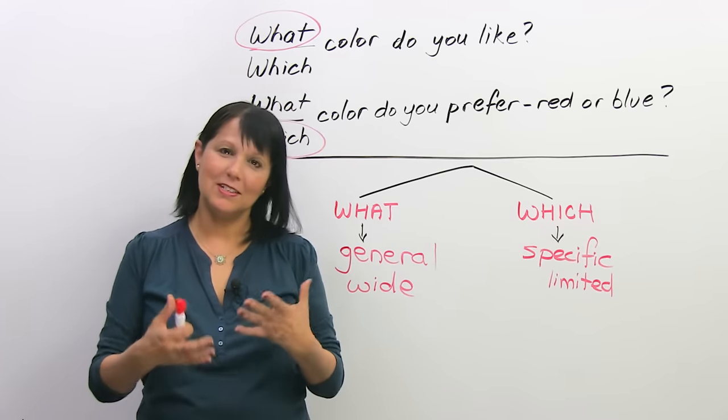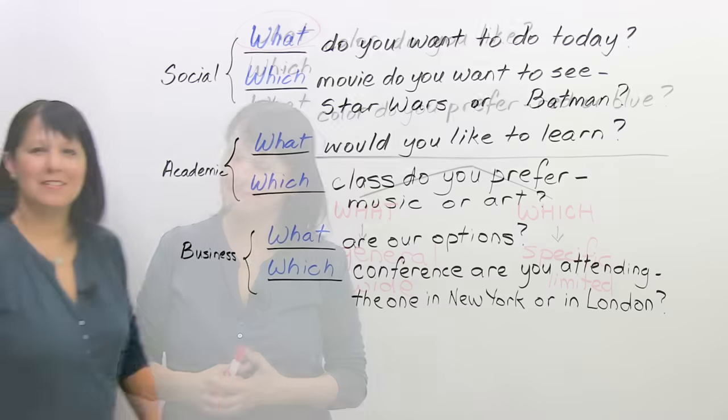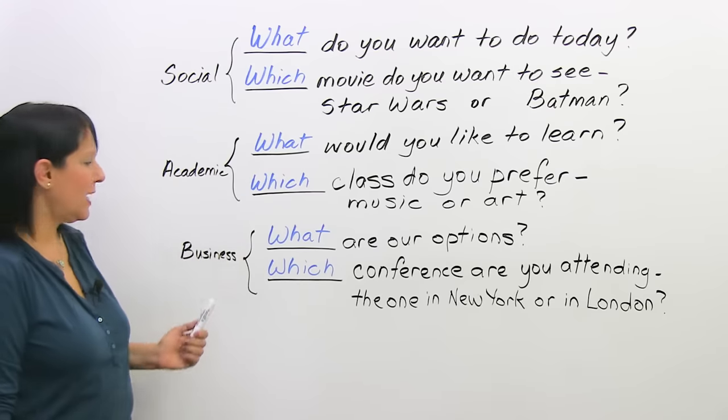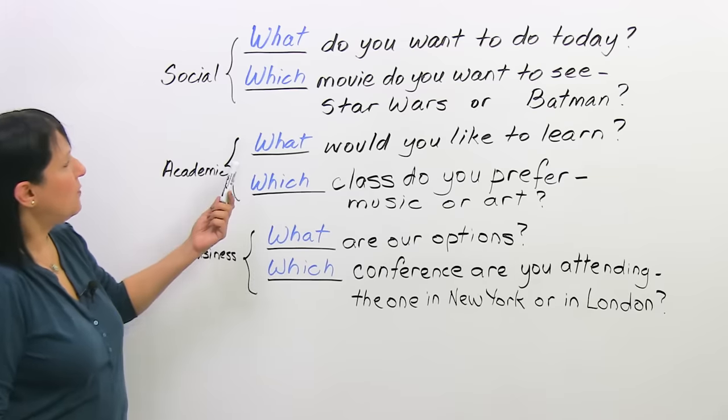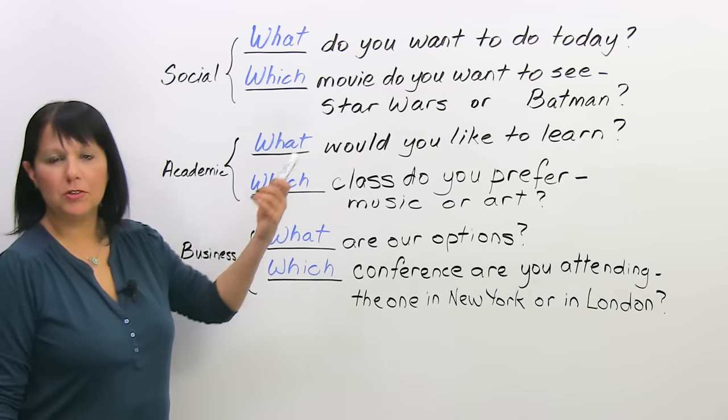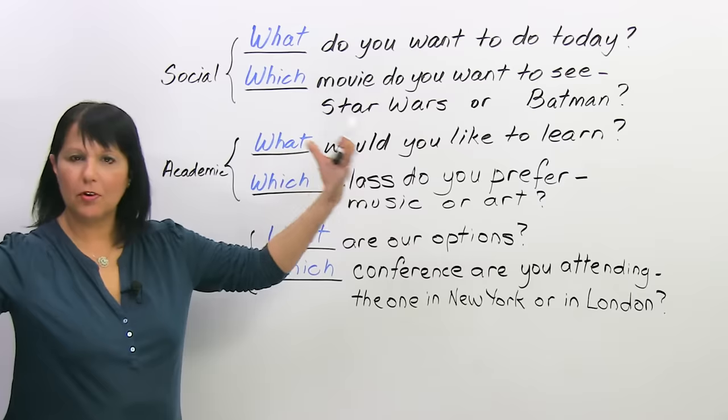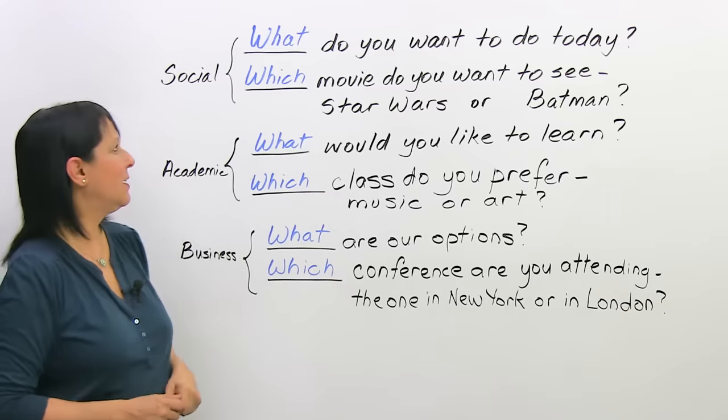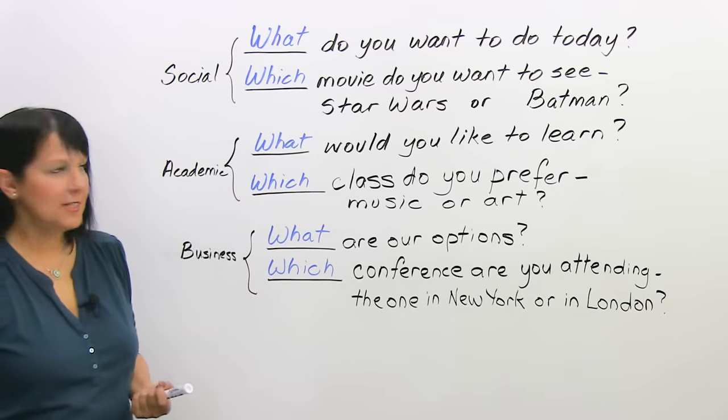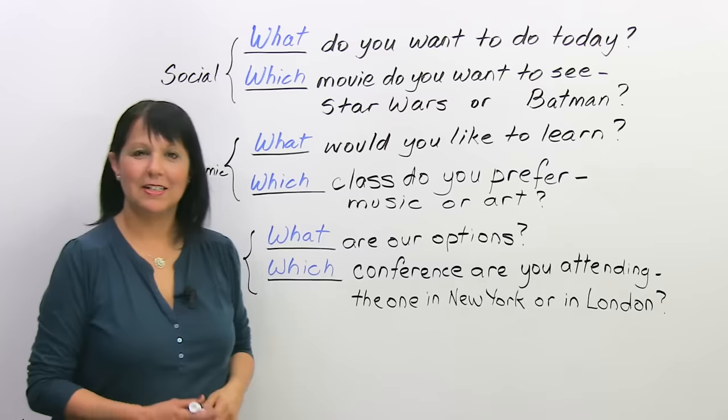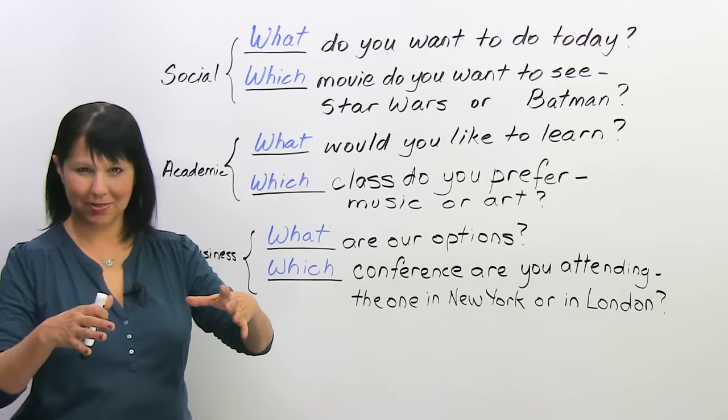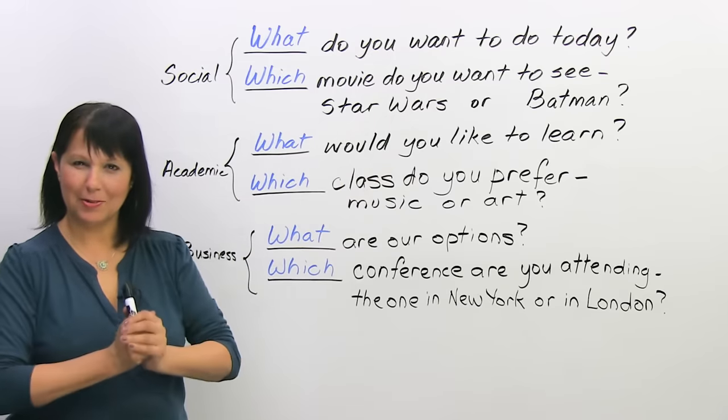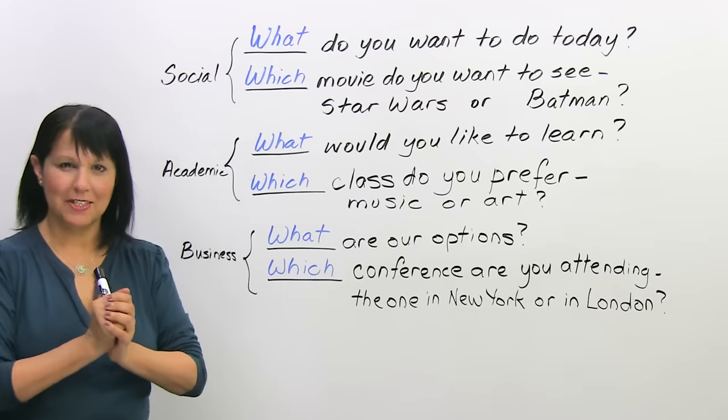So, let's look at a few more examples so you can understand exactly how this works. Let's look at some examples in a social context, in an academic context, and in a business context. For example, we could ask someone 'what do you want to do today?' Very general question out of all the things that we could possibly do in this city. Very broad, right? Or, 'which movie do you want to see? Star Wars or Batman?' Now, the choice is much more limited, it's more specific, and that's why we used 'which'. Do you see the difference between the broad and the narrow? Between the general and the specific.